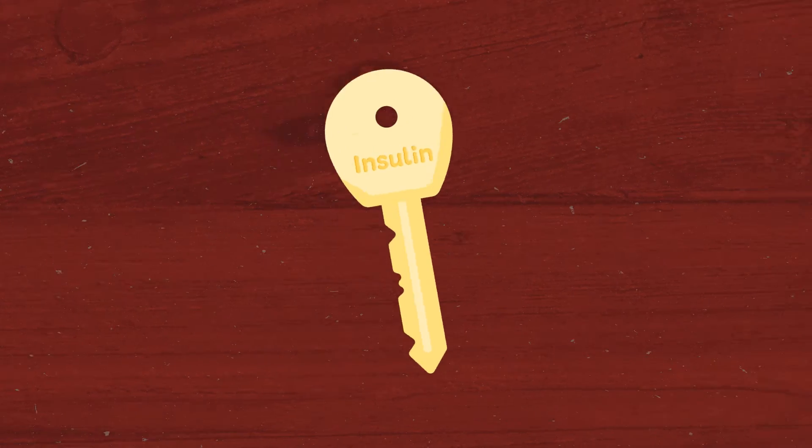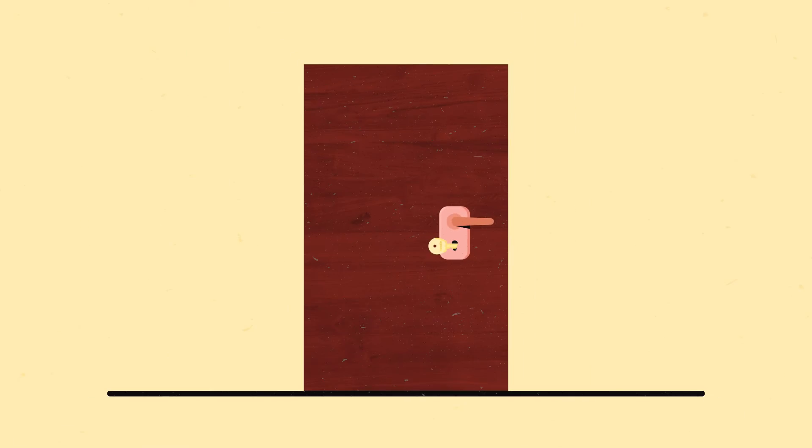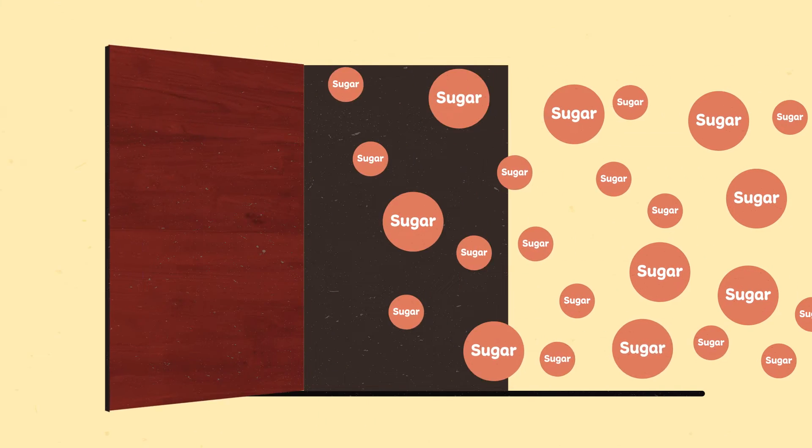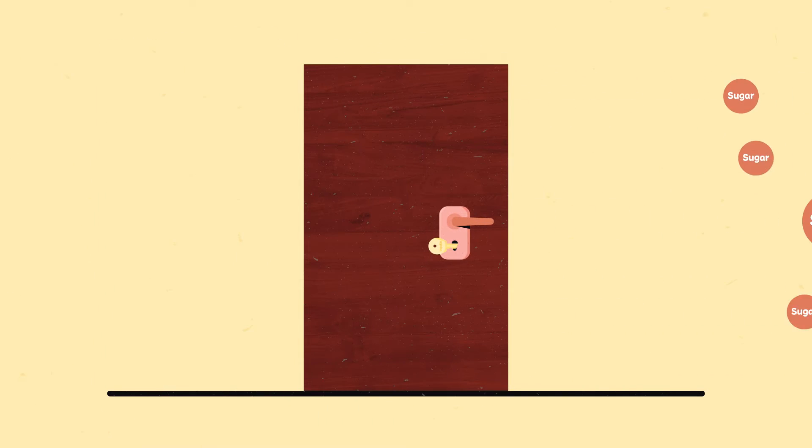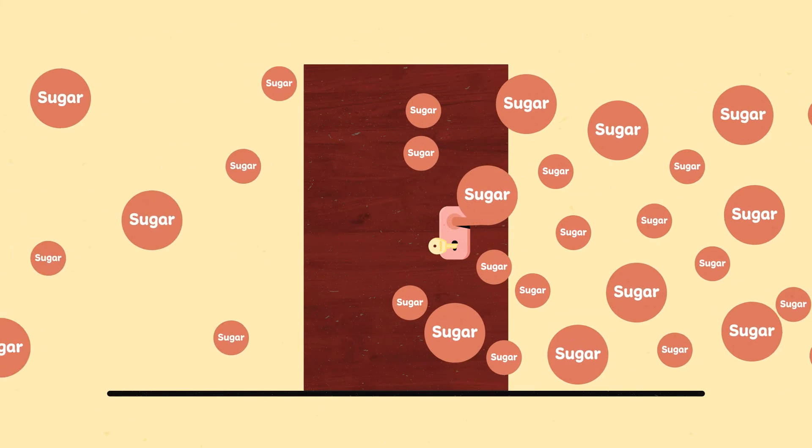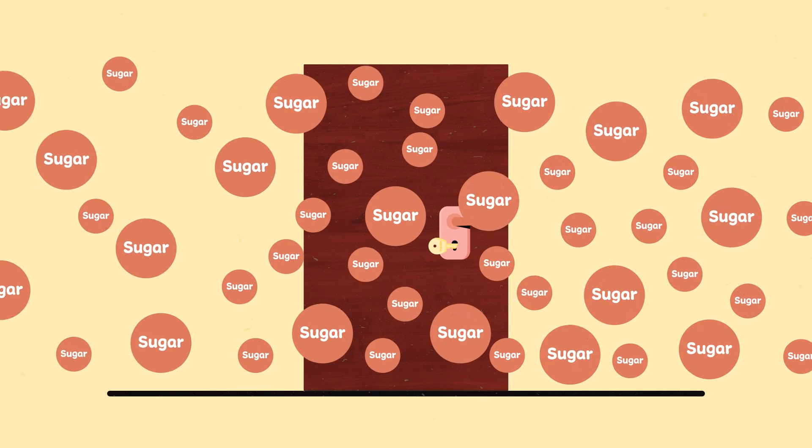Imagine insulin is like a key that opens the door to the cells in your body and lets the sugar from your blood enter. If the key doesn't work and the sugar can't enter, it builds up in the blood.